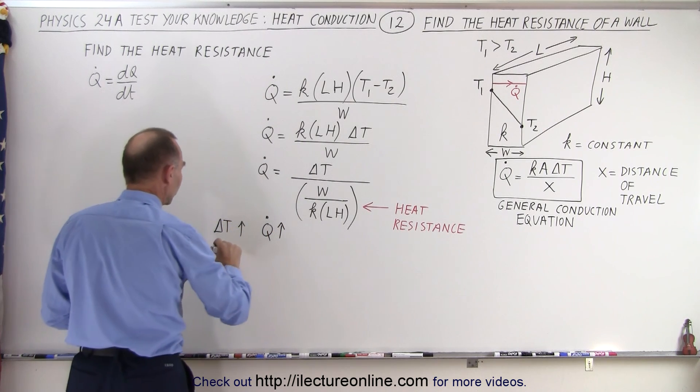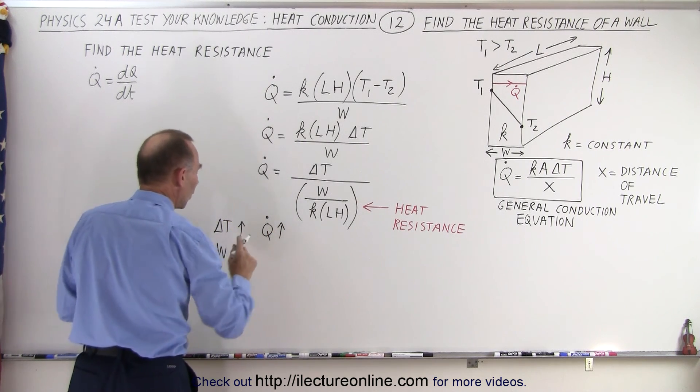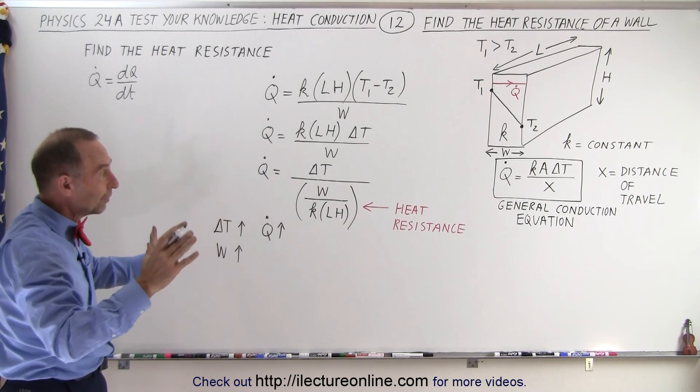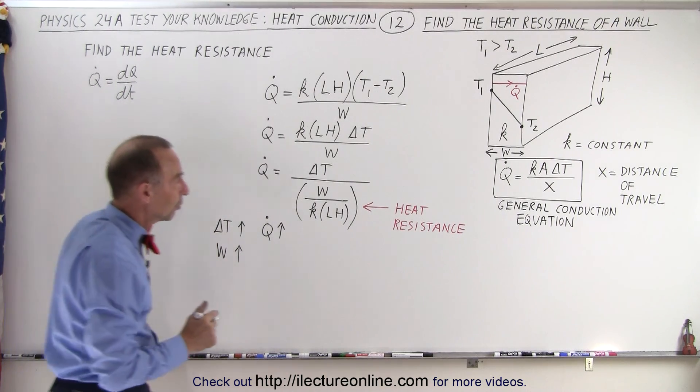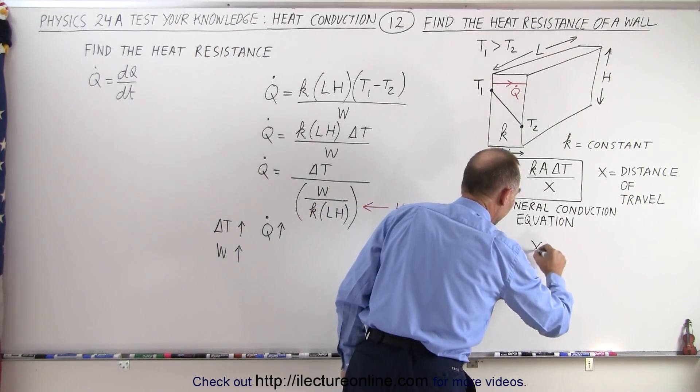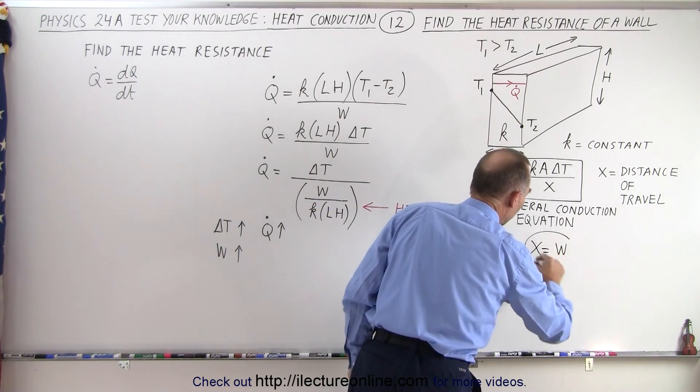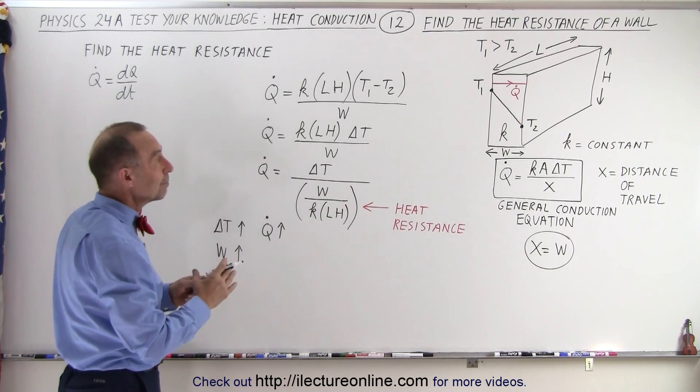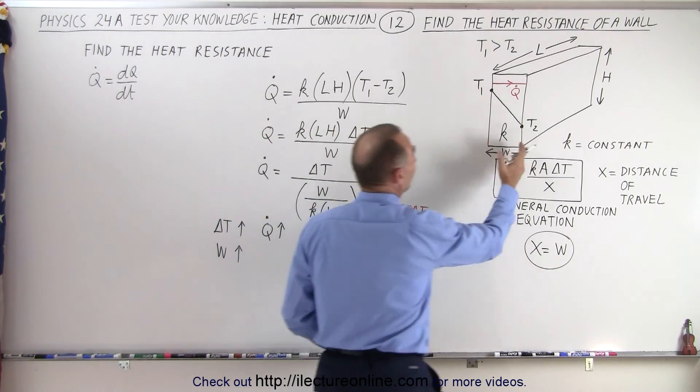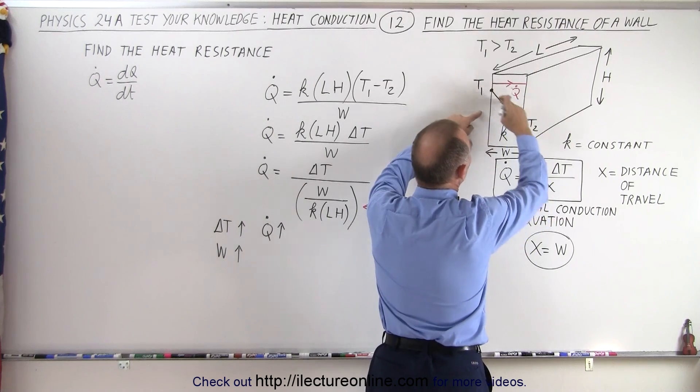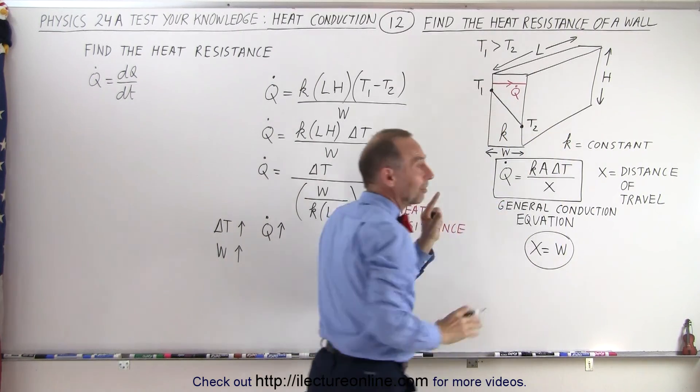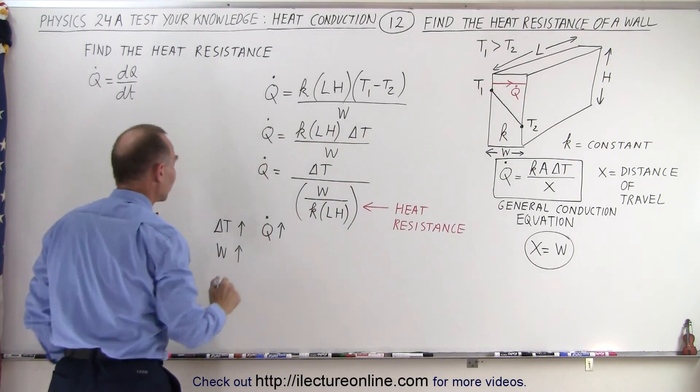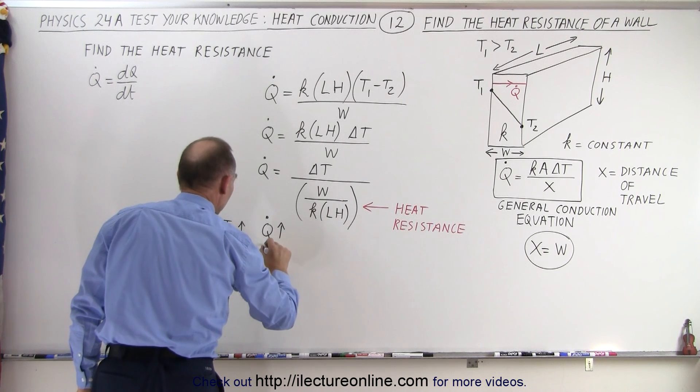What if W goes up? What if the width of the wall becomes larger? So the path of travel, x, which is now W here, so we can write that x equals W, x equals the width of the wall. So if the width of the wall increases, the path increases, that means that if there's a thicker wall, then the slope of that line will be less, the driving force of heat will be less, and Q dot will therefore diminish.